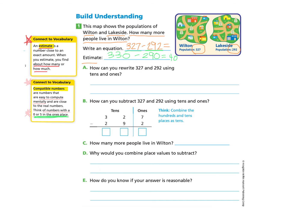Now let's take a look at part A. How can you rewrite 327 and 292 using tens and ones? When I look at the number 327, I know this is the ones, the tens and the hundreds place value. So if I only want to write this number using the tens and the ones place value, I just need to remember that for every 100, there really are 10 tens.